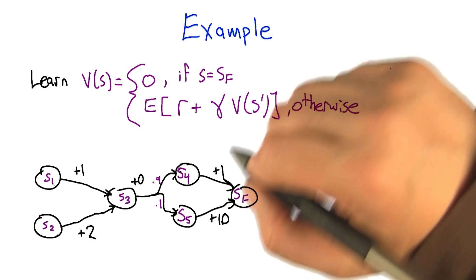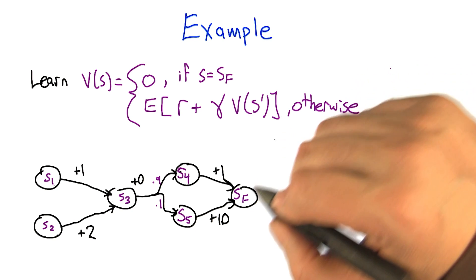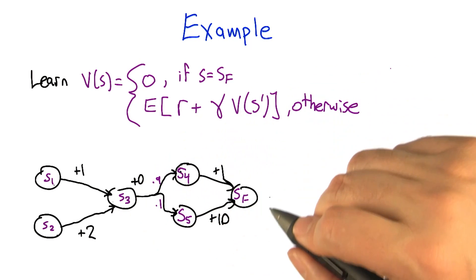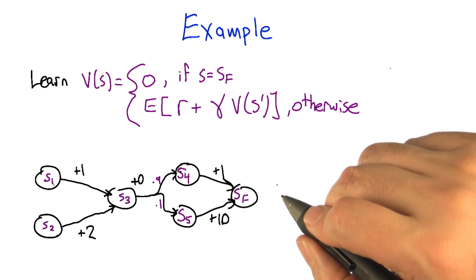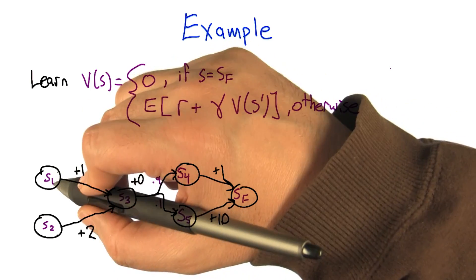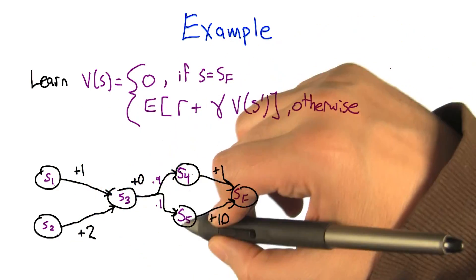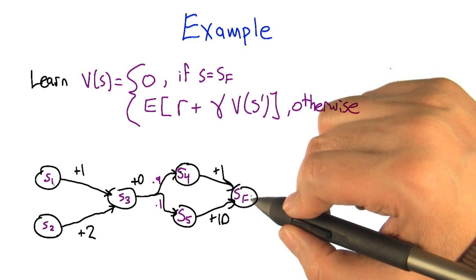For the kind of prediction problems we're learning with temporal difference methods, it's helpful to have a concrete example to ground out some of these terms. Let's take this as a Markov chain, with states S1, S2, S3, S4, S5, and SF for the final state.